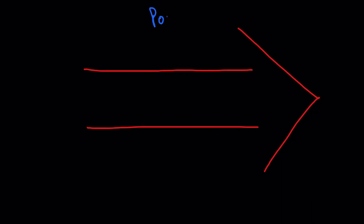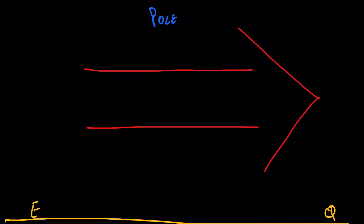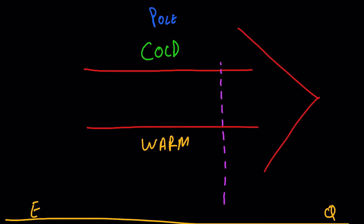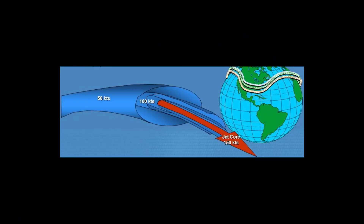Now let's look at a westerly jet stream in the northern hemisphere flowing from west to east, with the north pole to one side and the equator to the other. It will have cold air to the north and warm air to the south. If an aircraft is flying from the equator towards the north pole, it will get winds from the left because of this jet stream. So we can conclude that when crossing a jet stream with outside air temperature decreasing, we will experience winds from the left.